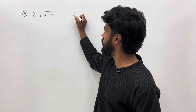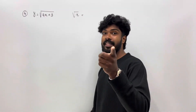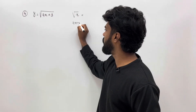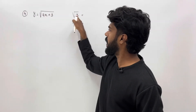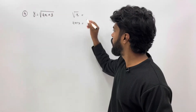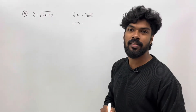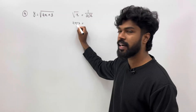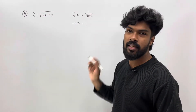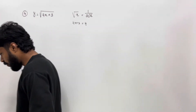You have a function for root(x) and you will have 4x plus 3. The derivative function of root x is 1 over 2 root x. The derivative of 4x plus 3: derivative of 4x is 4, derivative of 3 is 0, so the derivative of 4x plus 3 is 4.